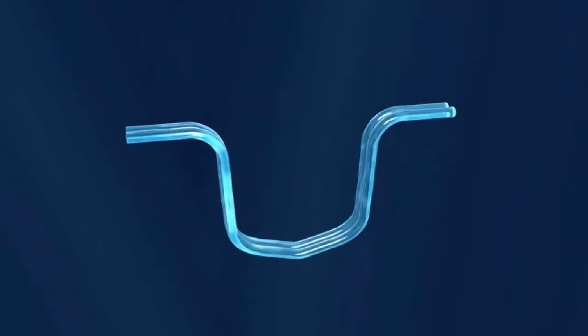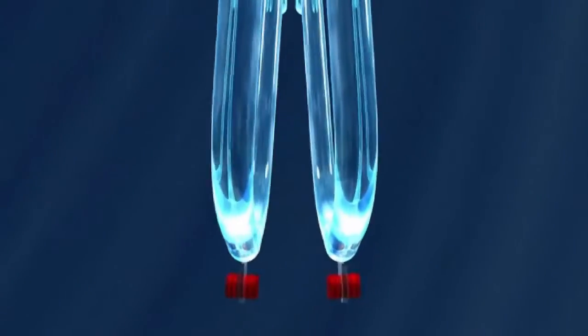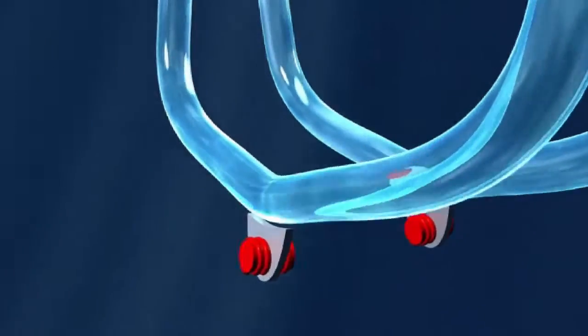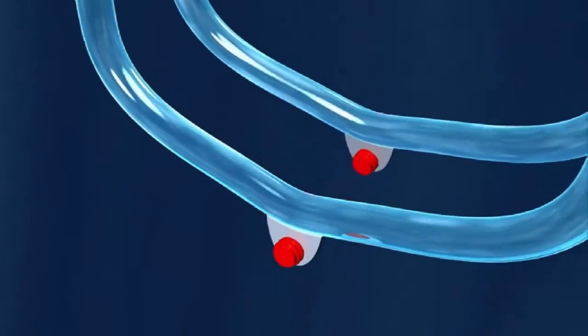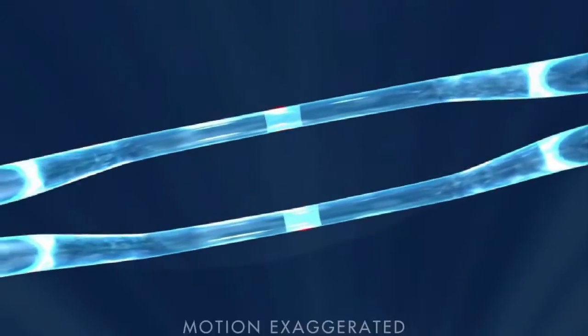For practical exploitation of this principle, it is sufficient for the two measuring tubes to perform oscillations on a small section of a circular path. This is achieved by exciting the measuring tubes with an electromagnetic exciter in its first resonance frequency.